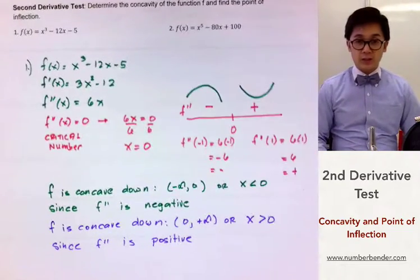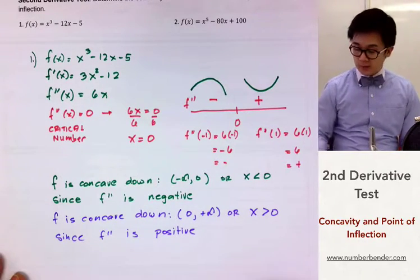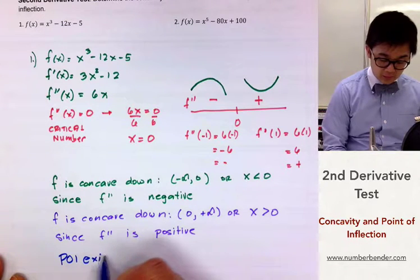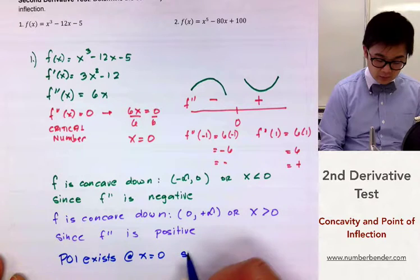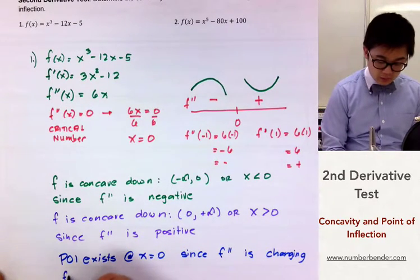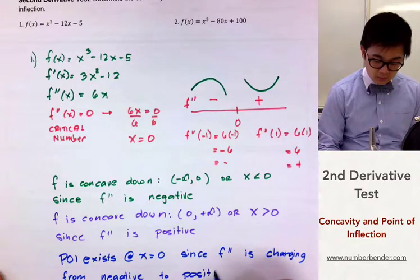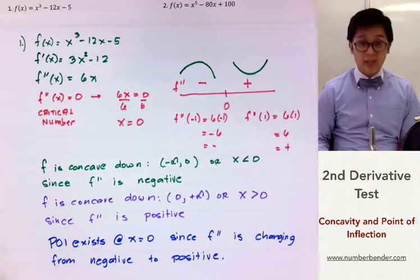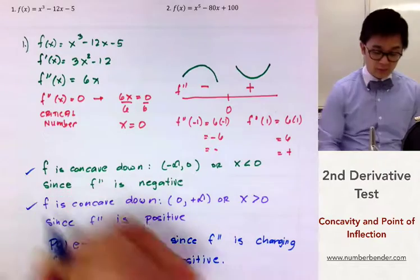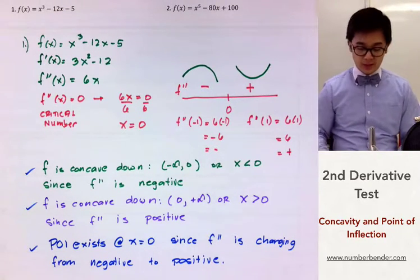Another condition about concavity: when you have concave down transitioning to concave up — or opposite concavity at a given critical number — you have a point of inflection. So a point of inflection exists at x equal to 0, since f double prime is changing from negative to positive. This completes our analysis of f of x using the second derivative test, identifying concavity and the point of inflection. Now let's answer problem number two.